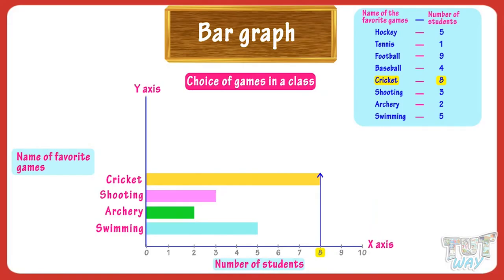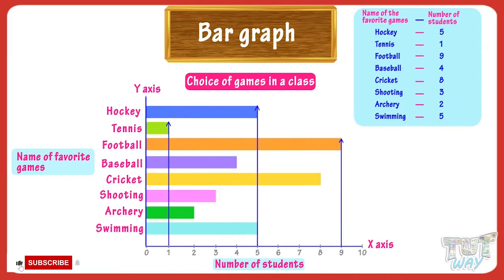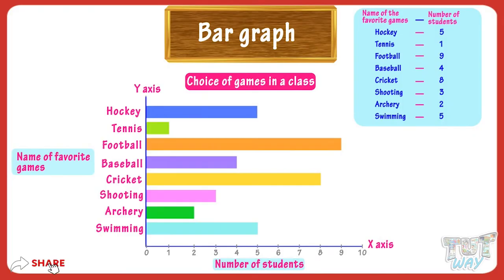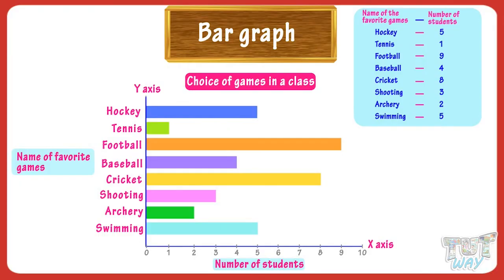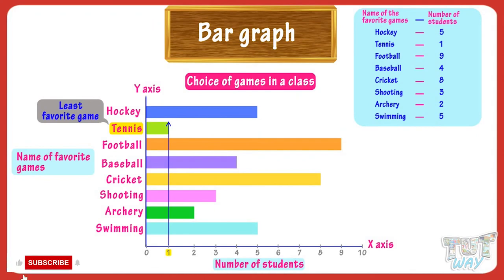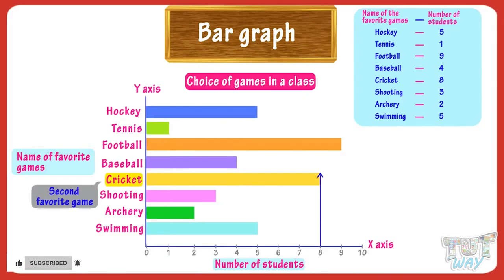Similarly, we can draw bars for all games and our graph will be ready. This is a graph where the rectangular bars are drawn horizontally on the y-axis and the scale is drawn on the x-axis. The graph shows that the favorite game of students is football, as the bar corresponding to football is the longest and the length of the bar is nine — that is, nine students like football. The least favorite game is tennis and only one student likes tennis. The second most favorite game is cricket as eight students like cricket the most.